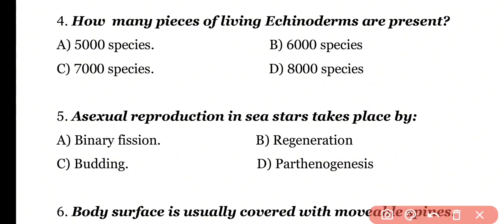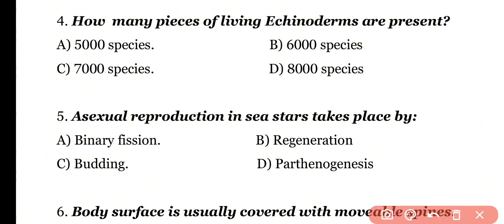Question 4: How many species of living Echinoderms are present? Options: 5,000 species, 6,000 species, 7,000 species, or 8,000 species. Correct answer is Option C. There are 7,000 species of living Echinoderms.